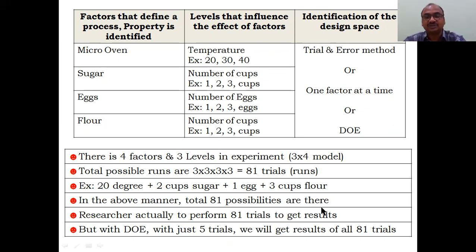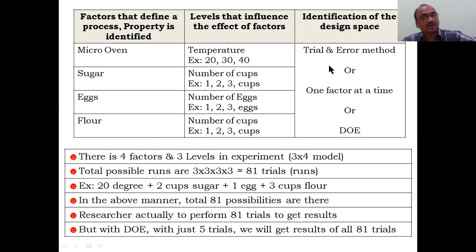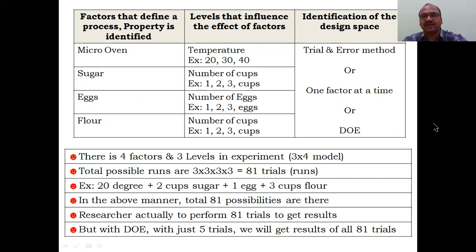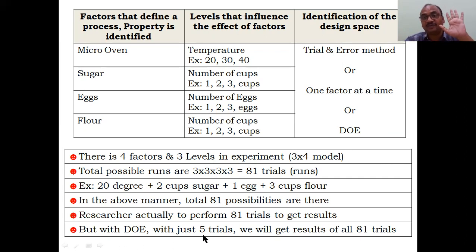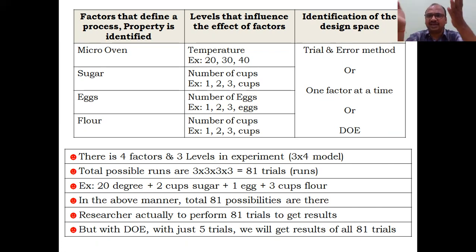The old trial-and-error method requires doing one trial at a time — if it fails, you try again. Now with DOE, using just five or six trials, you can get the results of all 81 trials. Design of Experiments software — like Minitab or similar tools — gives you the results of all 81 trials from just five or six actual experiments.